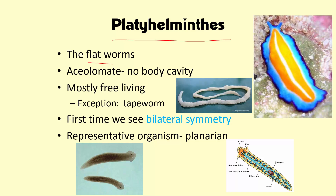This phylum contains all of the flatworms — anything like the parasitic tapeworm, to this really beautiful worm, to this planaria. The big adaptation here is bilateral symmetry. The platyhelminthes, or flatworms, were the first organisms on our planet to display bilateral symmetry. Bilateral means you can cut the organism one way to get equal halves on either side — just like we are. We have bilateral symmetry.